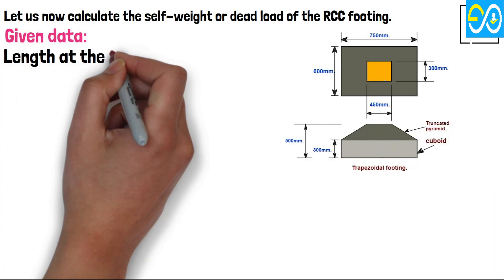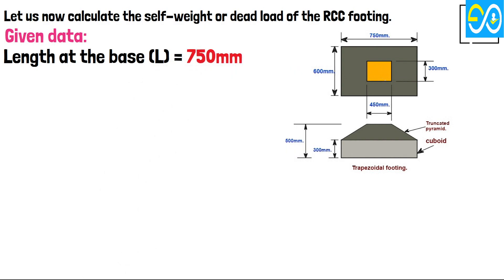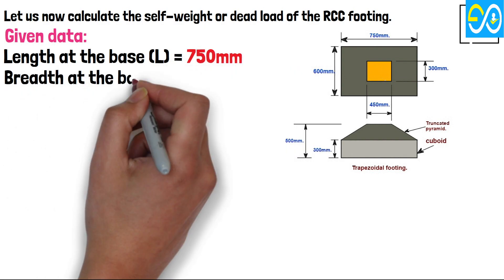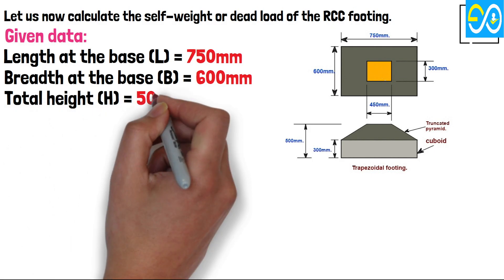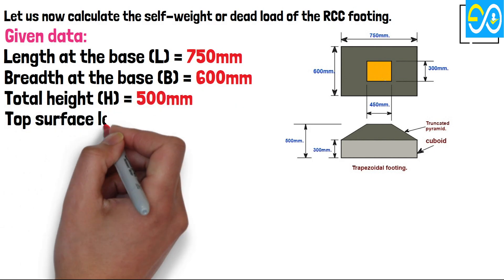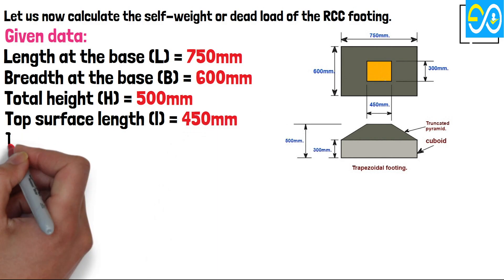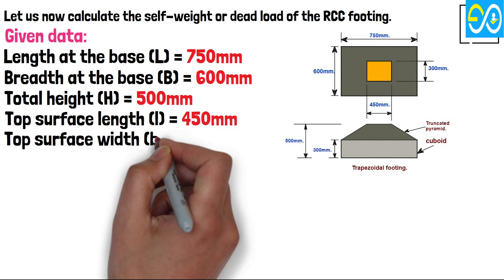Length at the base equals 750 millimeters. Breadth at the base equals 600 millimeters. Total height equals 500 millimeters. Top surface length equals 450 millimeters. Top surface width equals 300 millimeters.